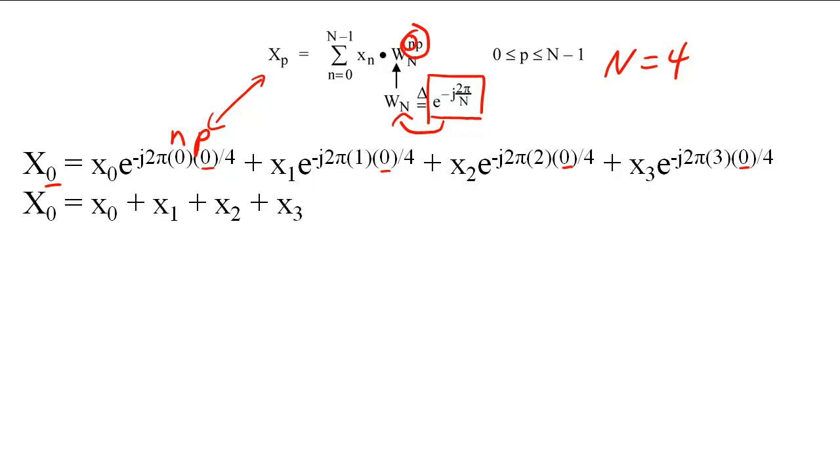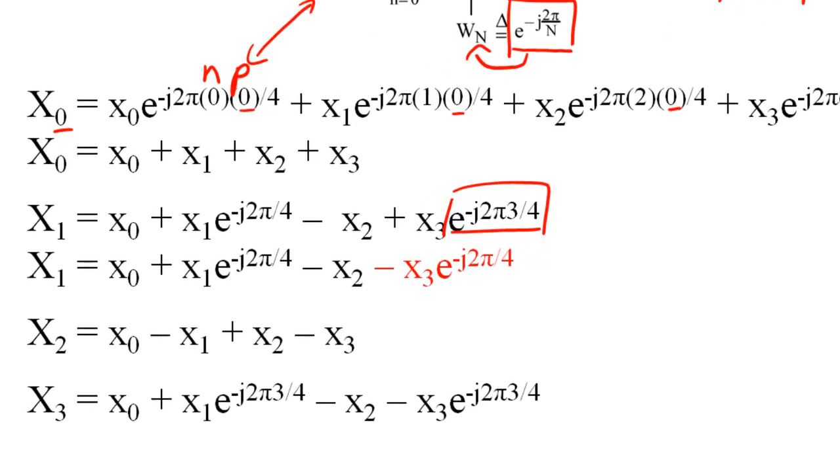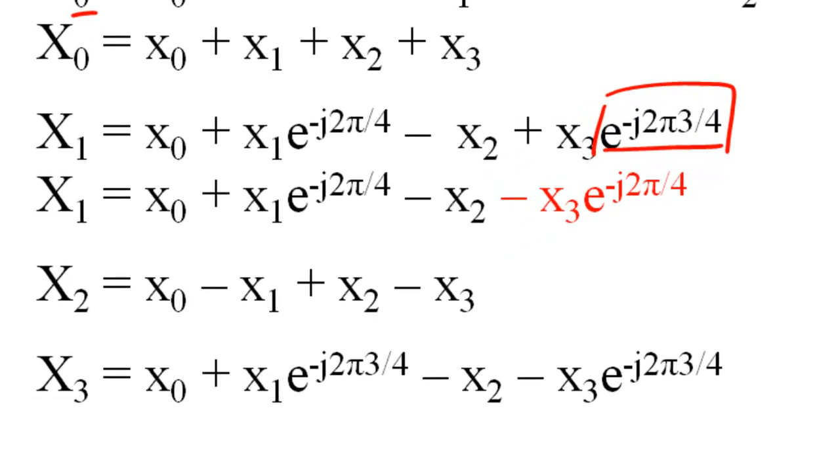By using a similar method, we can compute the second DFT sample. We will rewrite the X sub 3 sample for the sake of symmetry. I will explain the importance of this symmetry later. Finally, by using the same method, cap X sub 2 and cap X sub 3 will look like this.